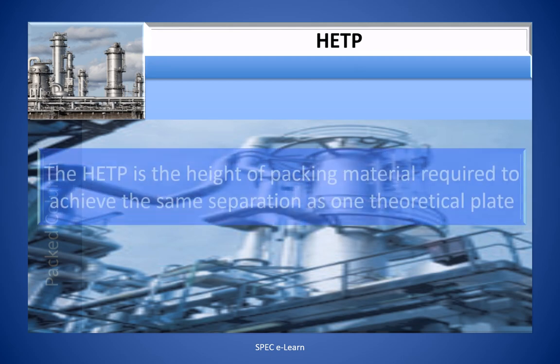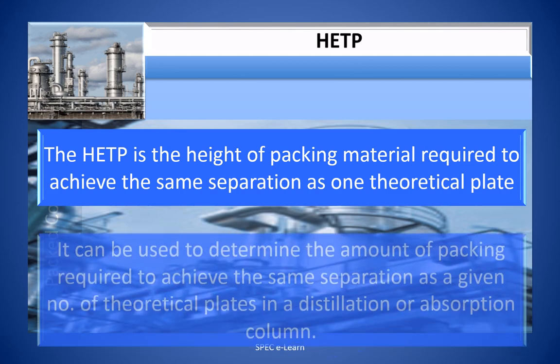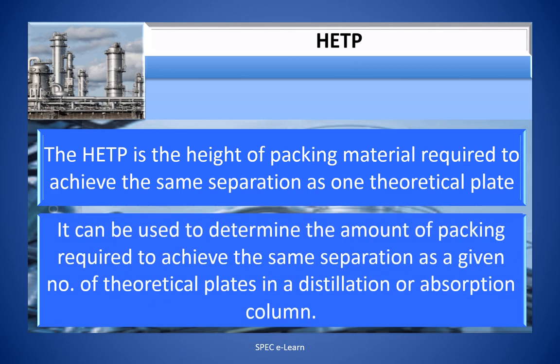The HETP is the height of packing material required to achieve the same separation as one theoretical plate. It can be used to determine the amount of packing required to achieve the same separation as a given number of theoretical plates in a distillation or absorption column.